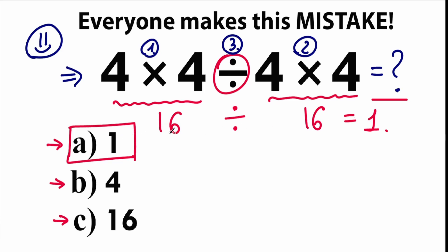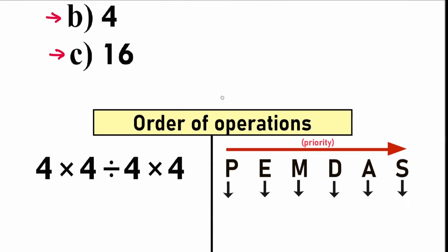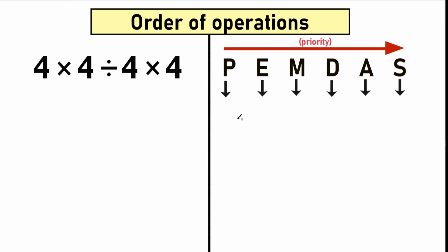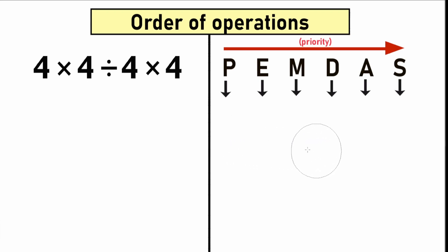Right now let's learn about order of operations. This order of operations is called PEMDAS. But it depends on what country you live in — for example, in India and the UK people use BODMAS. But PEMDAS and BODMAS are absolutely the same thing. Both are correct order of operations; it just depends on what country you live in. I will use PEMDAS order of operations, which is important in Europe, the USA, and many countries. Let's make a little research about PEMDAS.